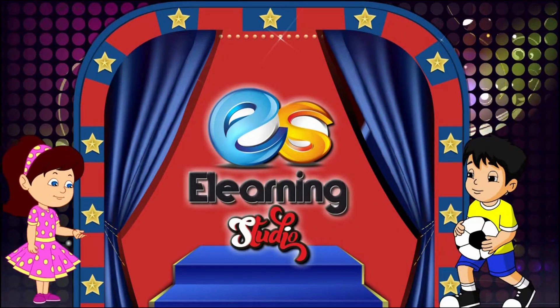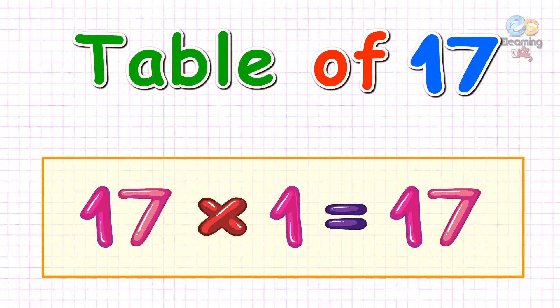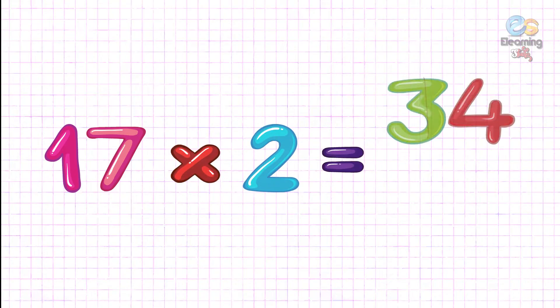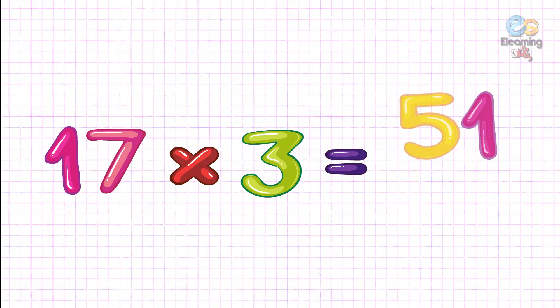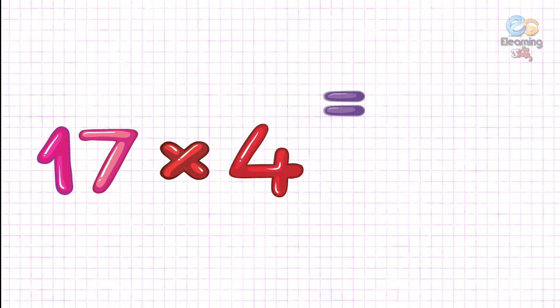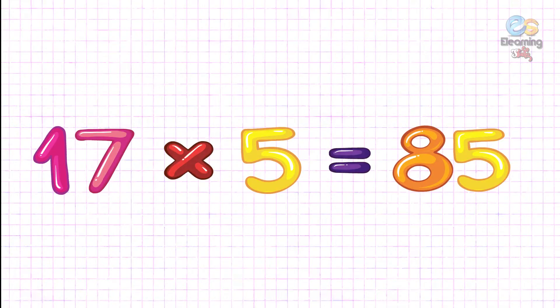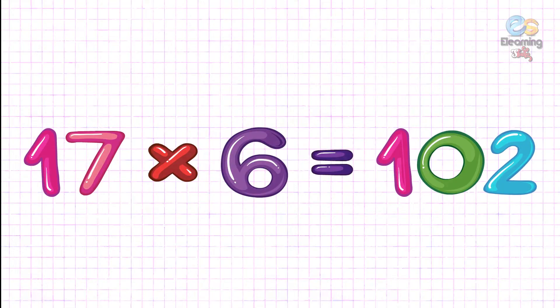E-Learning Studio. 17 ones are 17, 17 twos are 34, 17 threes are 51, 17 fours are 68, 17 fives are 85. 17 sixes are 102.